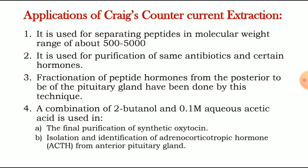Fourth, a combination of 2-butanol and 0.1 molar aqueous acetic acid is used in the final purification of synthetic oxytocin. It is also used in the isolation and identification of adrenocorticotropic hormone — in short, ACTH — from the anterior pituitary gland.